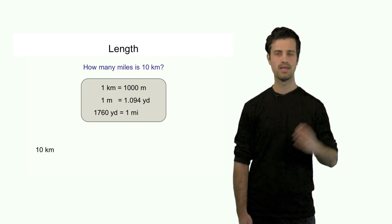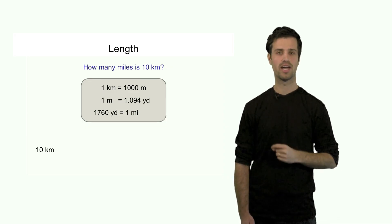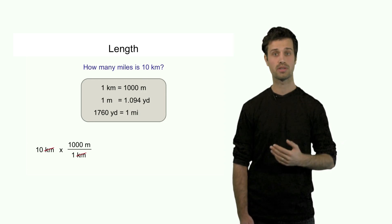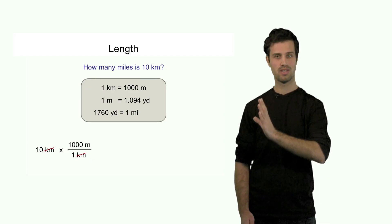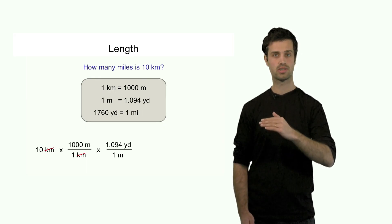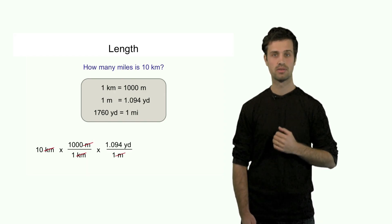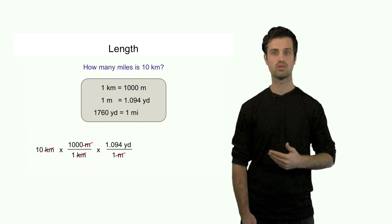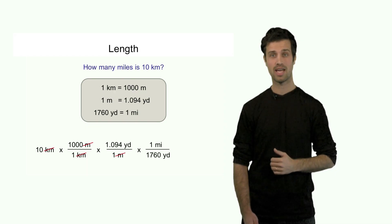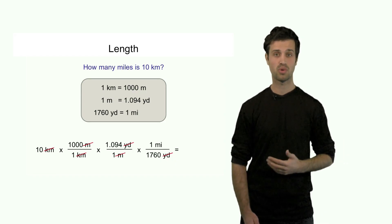Starting with 10 kilometers, I convert first to meters using the first definition in this box — I make a unit factor with meters on top and kilometers at the bottom, so the unit of kilometers strikes out and my number is now expressed in meters. Next, I convert meters to yards by multiplying by a unit factor with yards on top and meters at the bottom using the second line — meters cross out, giving yards. Finally, I convert yards to miles using the last line, with miles on top and yards at the bottom — yards strike out, and my final answer is expressed in miles: 6.22 miles.